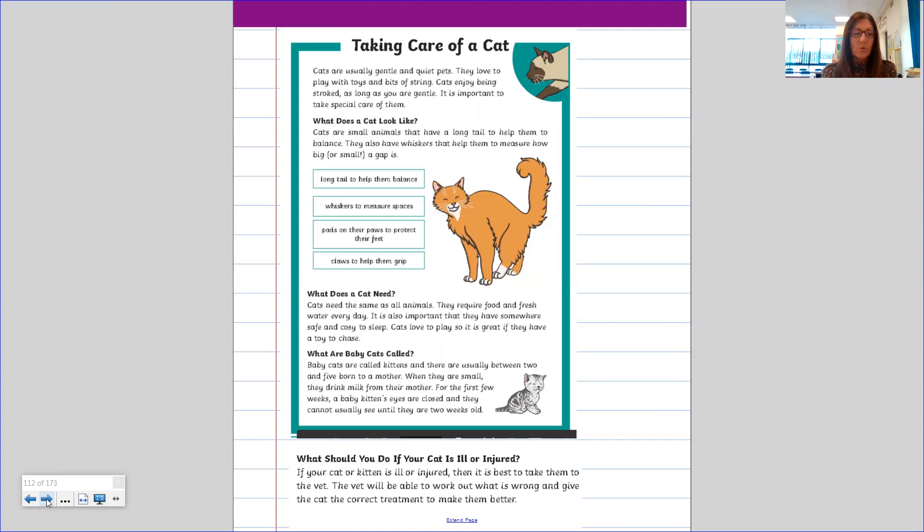What are baby cats called? Baby cats are called kittens and there are usually between two and five born to a mother. When they are small, they drink milk from their mother. For the first few weeks, a baby kitten's eyes are closed and they cannot usually see until they are two weeks old.